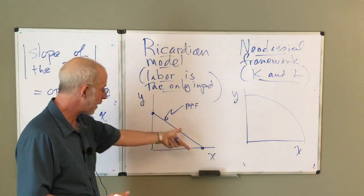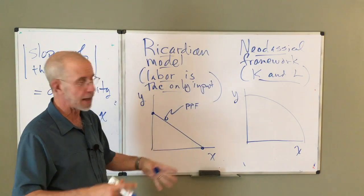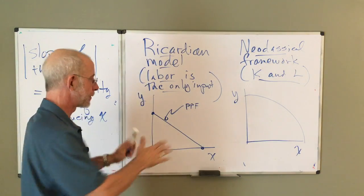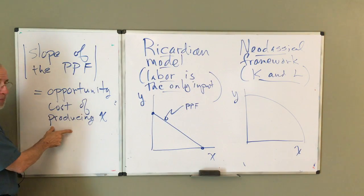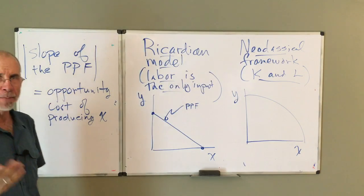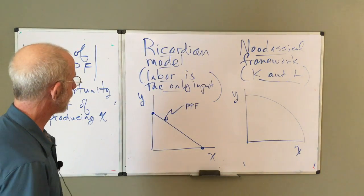Now, if you put Y on the horizontal axis, that would be reversed. But the way we've drawn it, the slope of the PPF, opportunity cost of producing X. Now, we'll go into that in much more detail in other material.